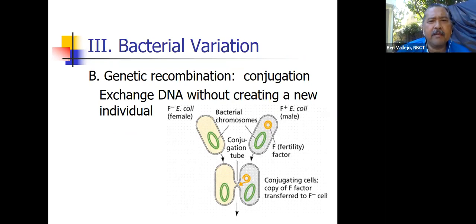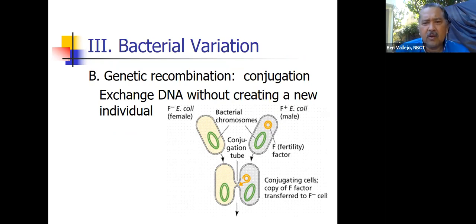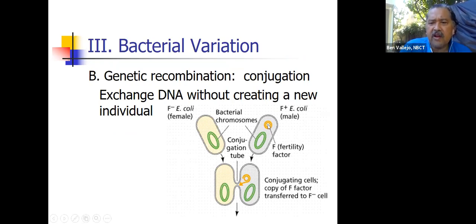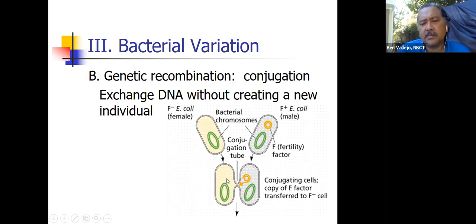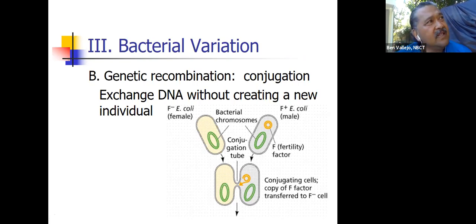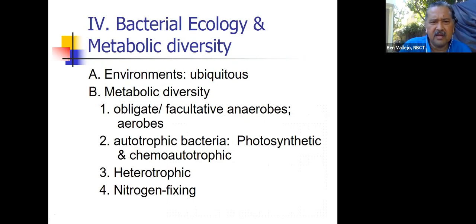Another way bacteria can become different besides mutating is through conjugation using the pilus. What happens is a plasmid — in this picture called the fertility factor — can be transferred over to another bacterium through the pilus. If you have a gene on there that you want to share, it can go through the pilus and into the next bacterium. That bacterium will then have a plasmid as well. Remember, a plasmid is a small piece of DNA that might have a few genes on it. If that gene is something like a disease, then you've just transferred that disease from one bacterium to another.